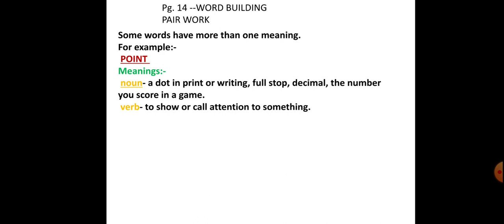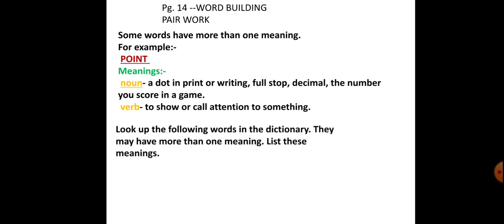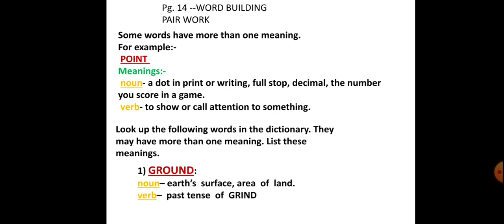Now on to word building. Some words have more than one meaning. For example, the word 'point': when used as a noun, it is a dot in print or writing, a full stop, or a decimal, and the number you score in a game is also a point. As a verb, it means to show or call attention to something. Now look up the following words in the dictionary — they have more than one meaning. For example, 'ground': as a noun, it is the earth's surface or an area of land; as a verb, it is the past tense of grind.